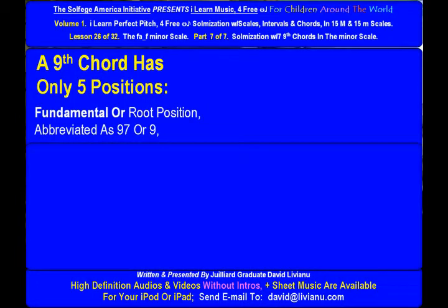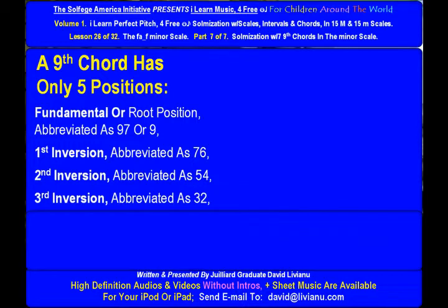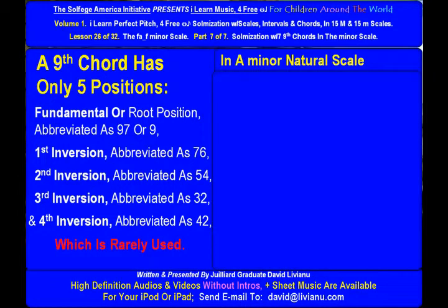Fundamental or root position abbreviated as 9-7 or 9. First inversion abbreviated as 7-6. Second inversion abbreviated as 5-4. Third inversion abbreviated as 3-2. And fourth inversion abbreviated as 4-2, which is rarely used.